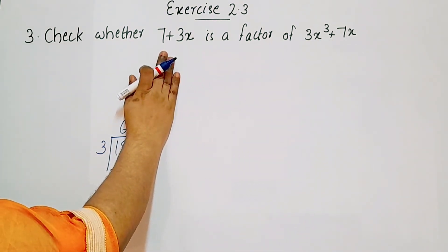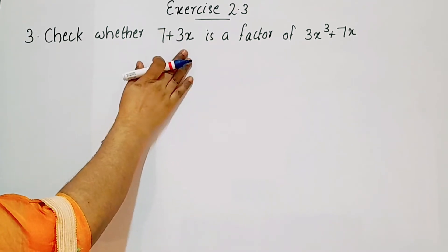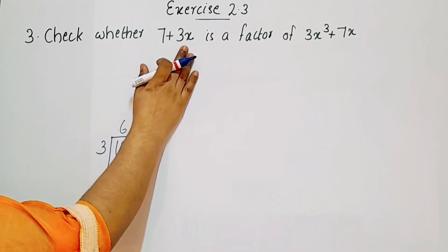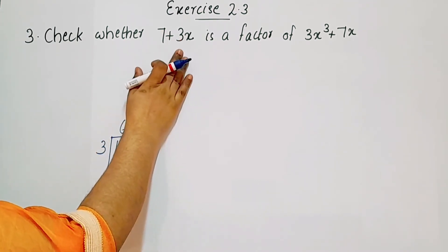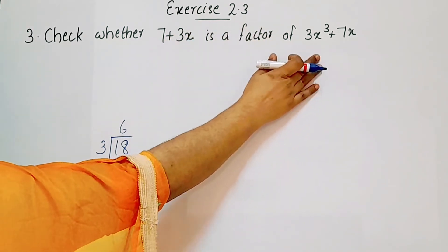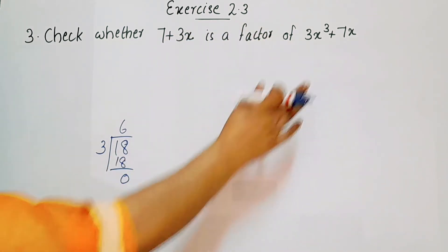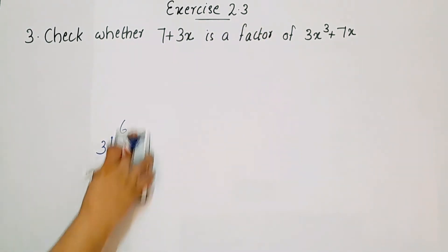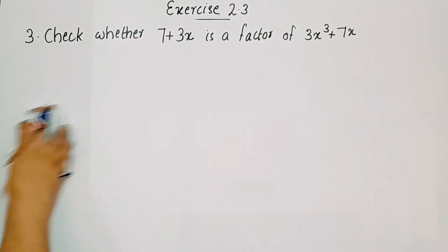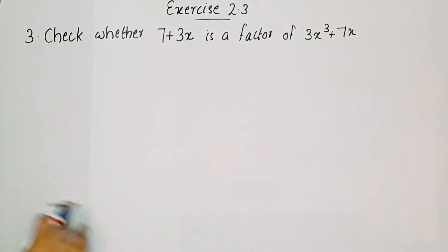We need to check if 7 plus 3x is a factor of 3x³ plus 7x. We can use the remainder theorem to do this.